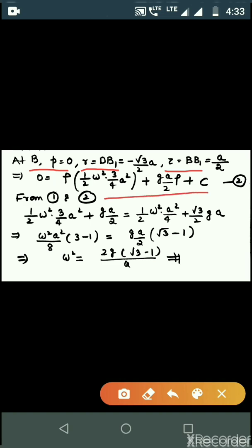We already have one equation for c in equation number 1. So equating both equations for c and solving, we get omega squared equals 2g under root 3 minus 1 upon a. Thank you.